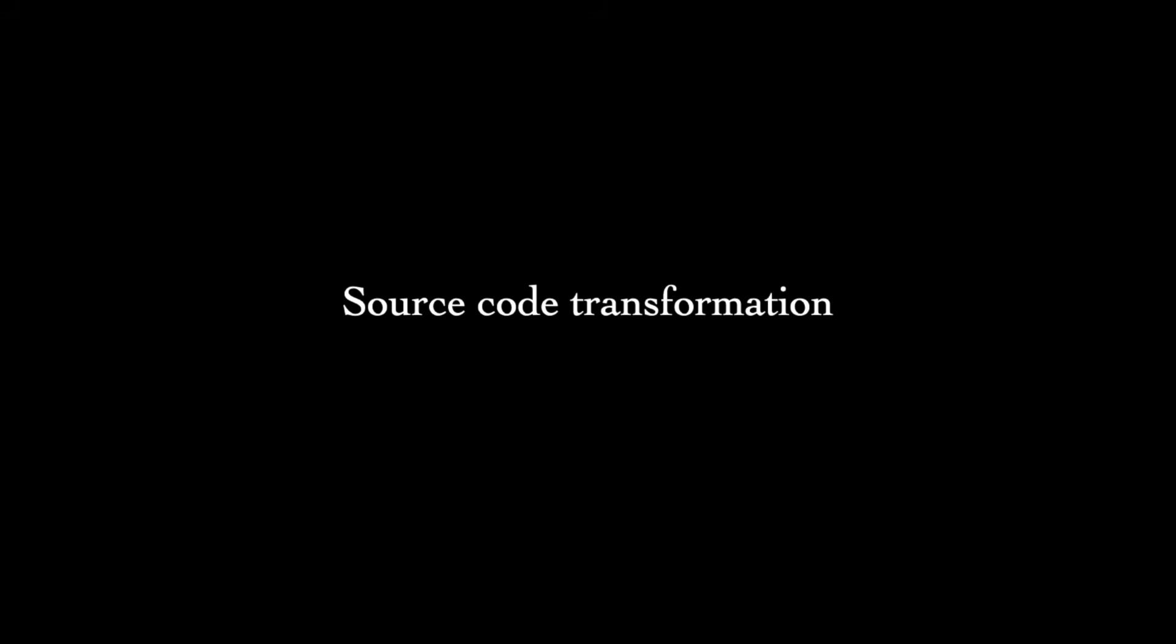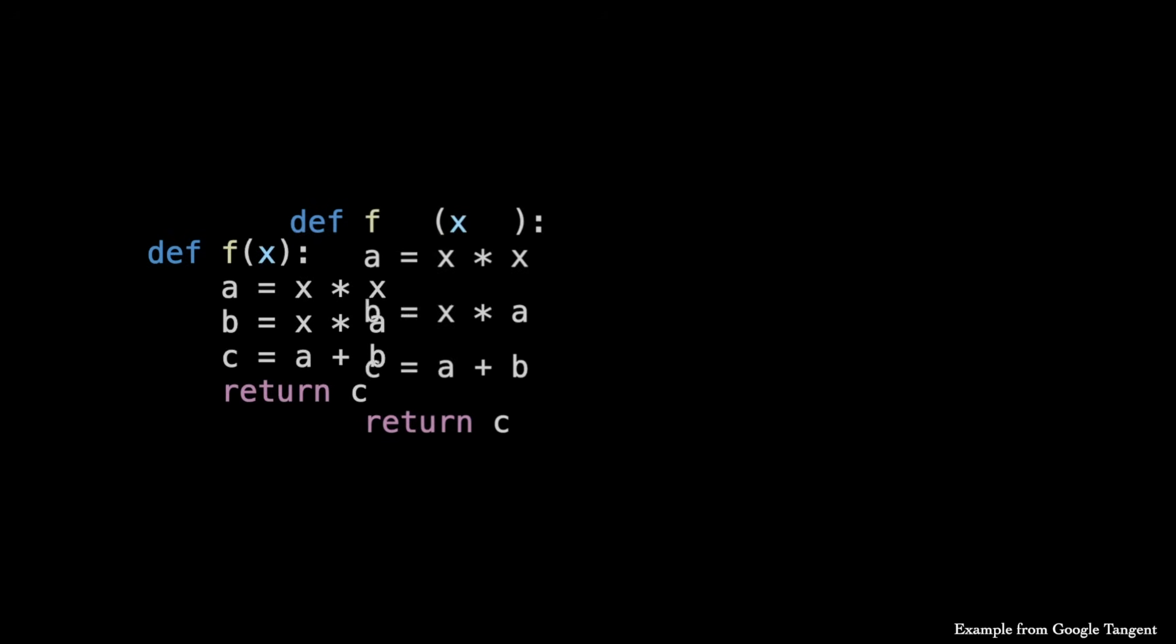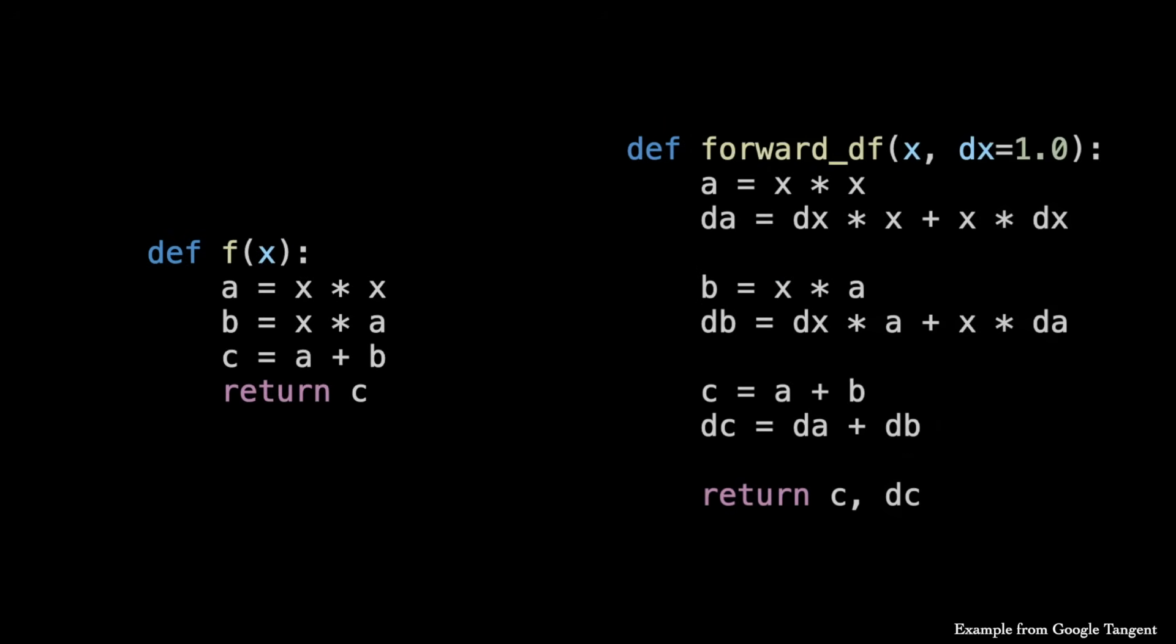Another general route is known as source code transformation, where input source code is actually manipulated to produce a new function. This can be more efficient than operator overloading, as it directly exposes the logic of the new source code to the compiler, but it's a bit more difficult to implement. I'll provide links in the description for further details about different kinds of implementations, as well as example software libraries.